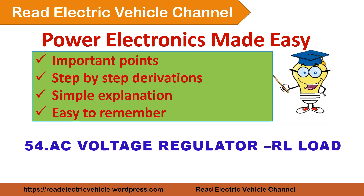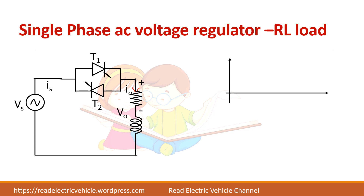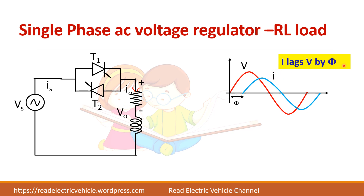In this video we will see about AC voltage regulator feeding RL load. In single phase AC voltage regulator with R load, the voltage and current are always in phase, so it is easy to analyze the performance. However, in case of RL load, the voltage and current are not in phase — current lags voltage by the load angle phi. This plays an important role in the performance of the AC voltage regulator.